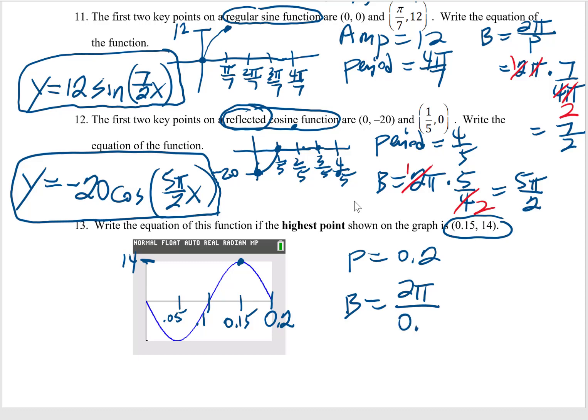The B value is simply 2 pi divided by that number, divided by the period. Maybe it would be easier to think of 0.2 as a fraction. It's 2 tenths, which reduces to 1 fifth. And dividing by 1 fifth is the same thing as multiplying by 5. And so my B value is going to come out to be 10 pi.